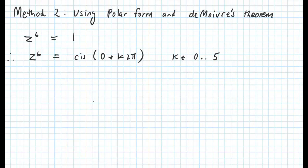We represent 1 as cis 0 plus k lots of 2 pi. We put k lots of 2 pi in there because we're after multiple solutions, and we're looking at setting k between 0 and 5 because we're expecting six distinct solutions.